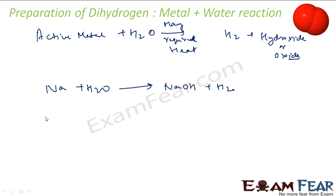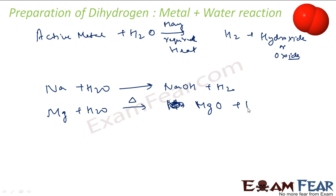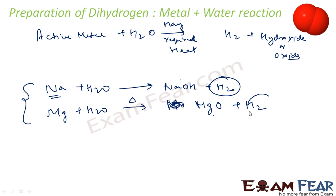If you take a less reactive metal like magnesium and add it to water, you have to apply heat. You get MgO and hydrogen gas. So with sodium you get hydroxide, while with magnesium you get oxide. These are very typical reactions: sodium + water → NaOH + H₂; magnesium + water (with heat) → MgO + H₂.